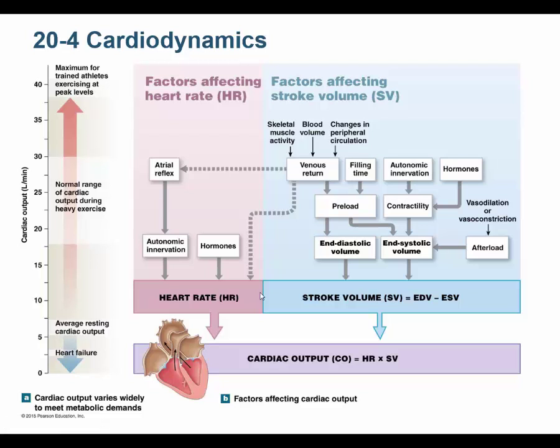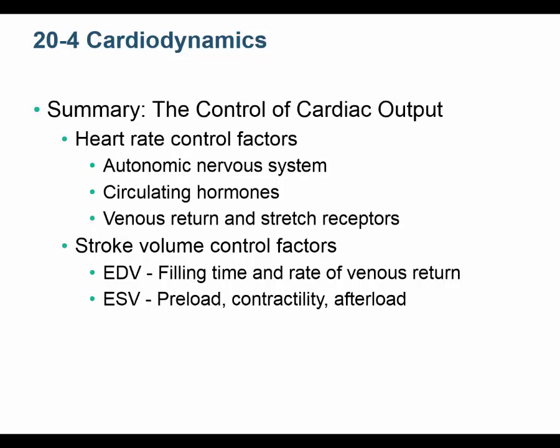This summarizes everything: hormones, the autonomic nervous system, the Frank-Starling law, and various receptors can all affect heart rate, cardiac output, and stroke volume. Make sure you can work through each scenario — high or low venous return, contractility, and afterload. Next chapter: blood vessels.